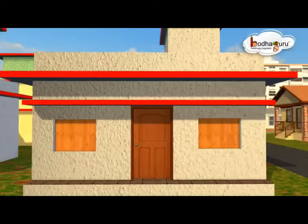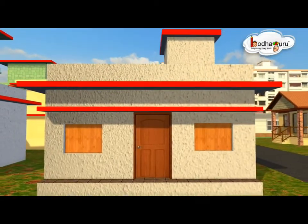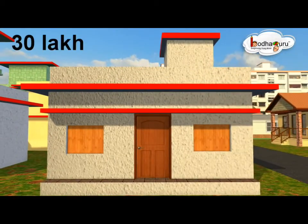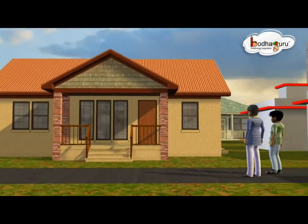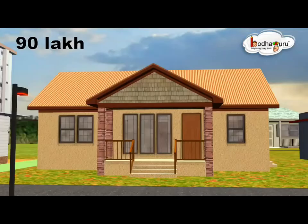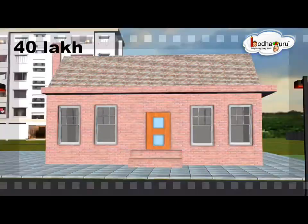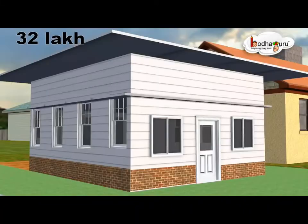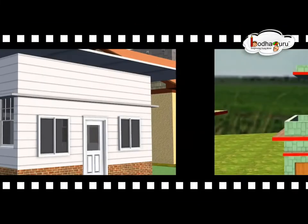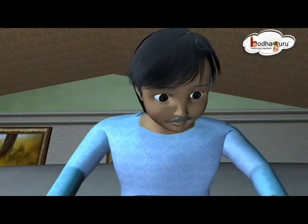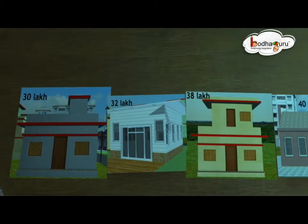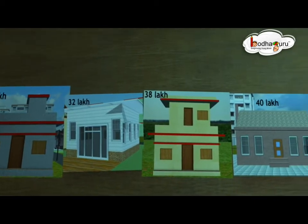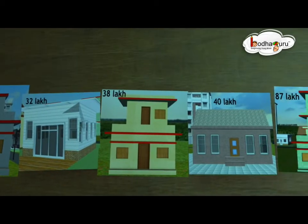All houses had different prices starting from 30 lakh rupees to a very expensive house of 95 lakh rupees. He arranged the houses in the ascending order of price. The median was 40 — the midpoint value.